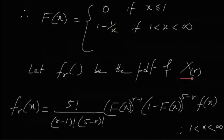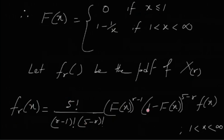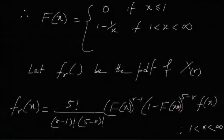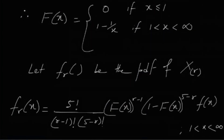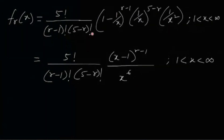Let f_r be the PDF of X_(r), the rth order statistic. From the formula, f_r(x) = 5! / [(r−1)! · (5−r)!] · F(x)^(r−1) · [1−F(x)]^(5−r) · f(x), for x > 1. We know both the PDF f(x) and the CDF F(x) of the distribution.